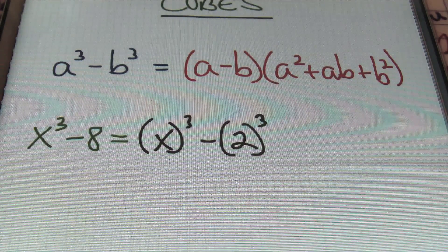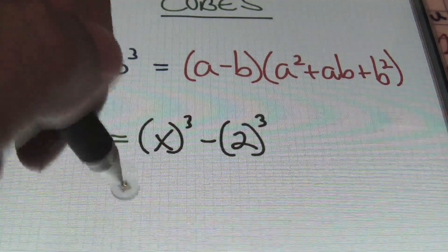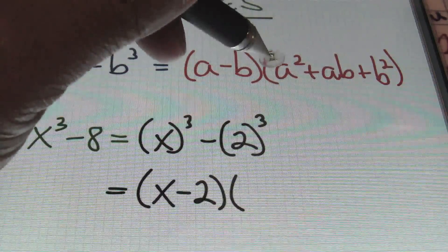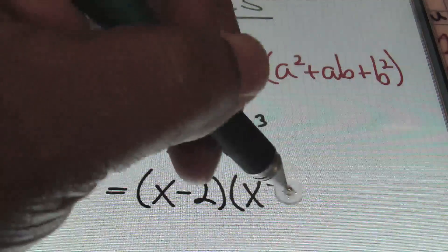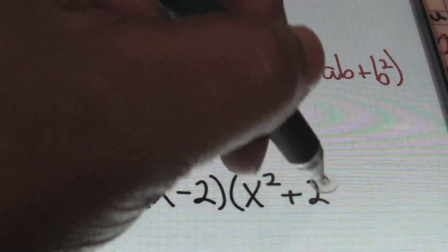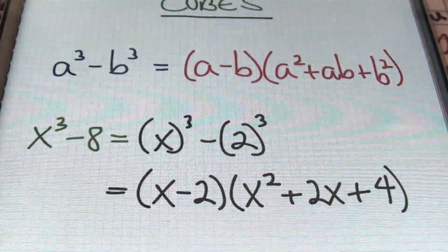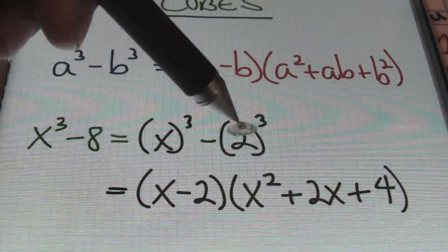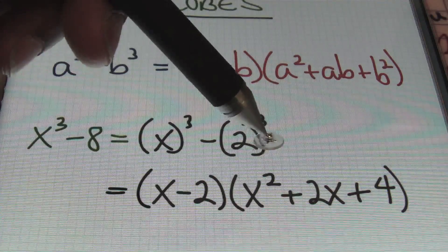Knowing that you're dealing with a perfect cube is where it begins. From there, using the factoring pattern, I'll be plugging in x minus 2, and then our formula tells us to square that first term within the parentheses. So I have x squared, plus the product of these two terms — that's going to be 2x — plus the number 2 squared, which is 4. And there you have it. By the way, this trinomial will always look as though it's a perfect square trinomial, but it's not. It will always be prime, a.k.a. not factorable.